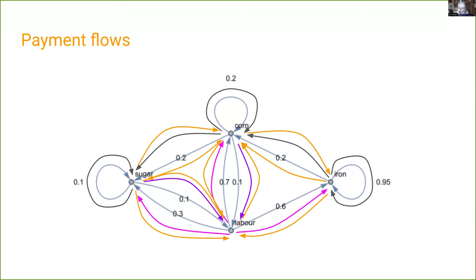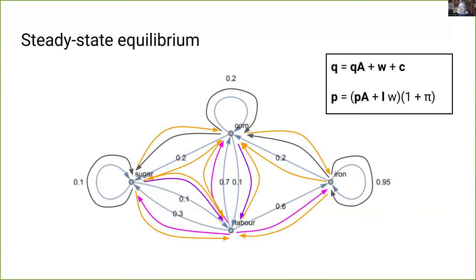Since this is a steady state, all these flows are balanced. This is a monetary economy so everything has a price, which must be paid for with fiat money. The yellow lines represent payments between sectors, flowing in the opposite direction of the flow of goods. Since this is a steady state, these money payments balance. The equations at top right specify these steady-state flows — these are the linear algebra equations you typically see in presentations of the transformation problem.